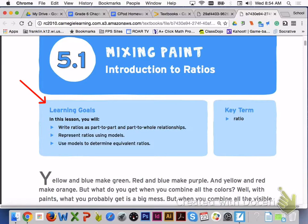You will write ratios as part-to-part and part-to-whole relationships, represent ratios using models, and use models to determine equivalent ratios. Key term to look for today in lesson 5.1 is ratio.